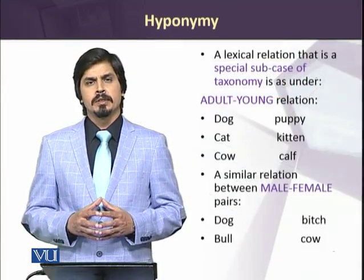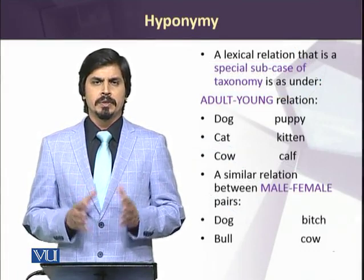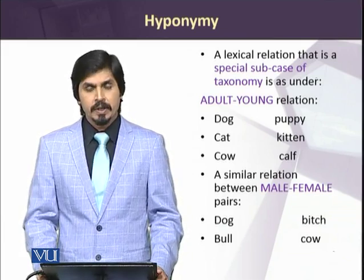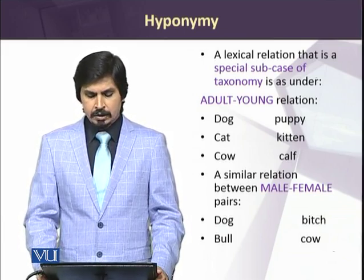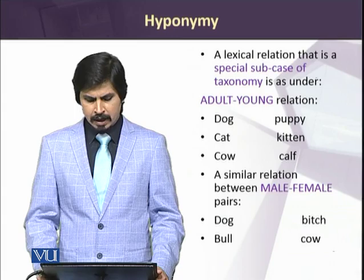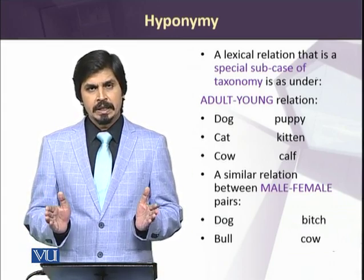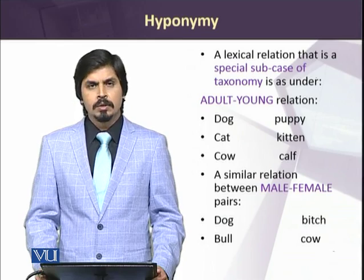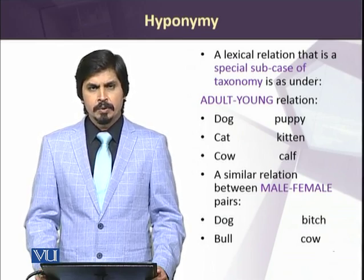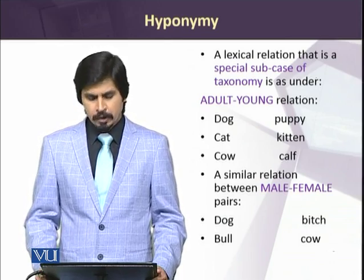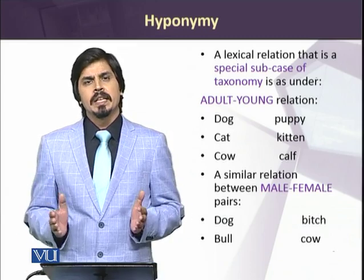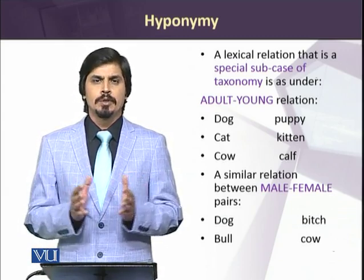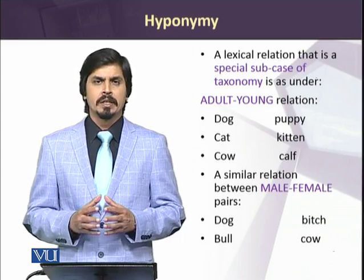Moving forward, there can be some other subclasses of taxonomies which tell us about various relationships between words. A few of these include the relationships of adult and young, and male and female. For adult and young, we can cite examples like dog and puppy, cat and kitten, cow and calf. For male-female relations, we have dog and bitch, bull and cow. In such classifications, we also have meanings which relate to each other and help us understand the meanings of one another.